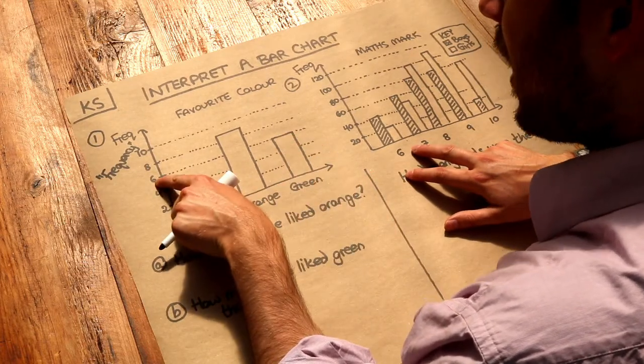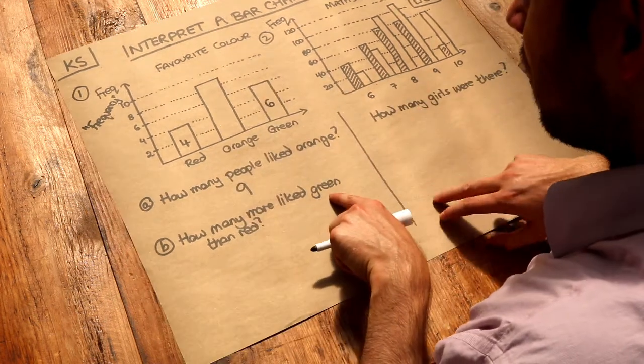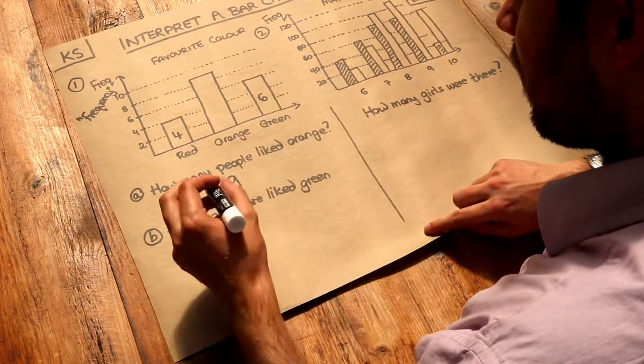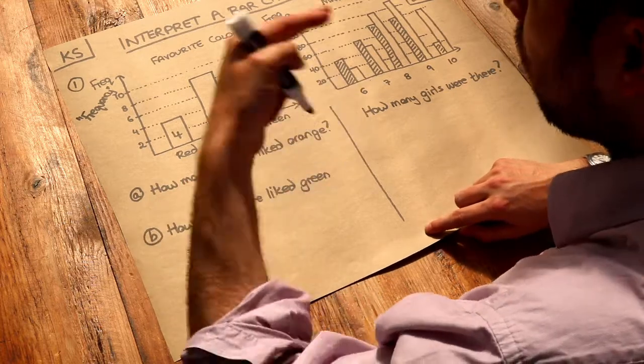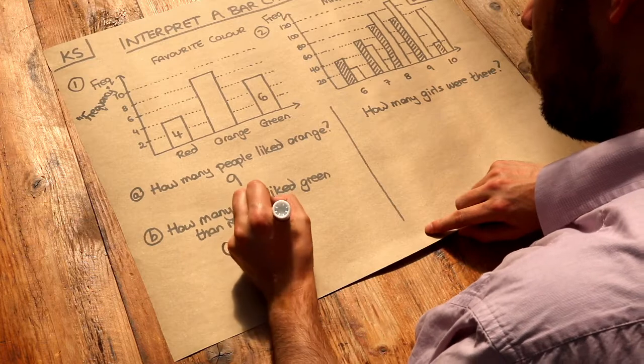I'm just going to write that on the bar. And then green, go to the top of the bar, go across. 6 people liked green. So how many more people liked green than red? Well, we just have to find the difference, so 6 minus 4 is 2.